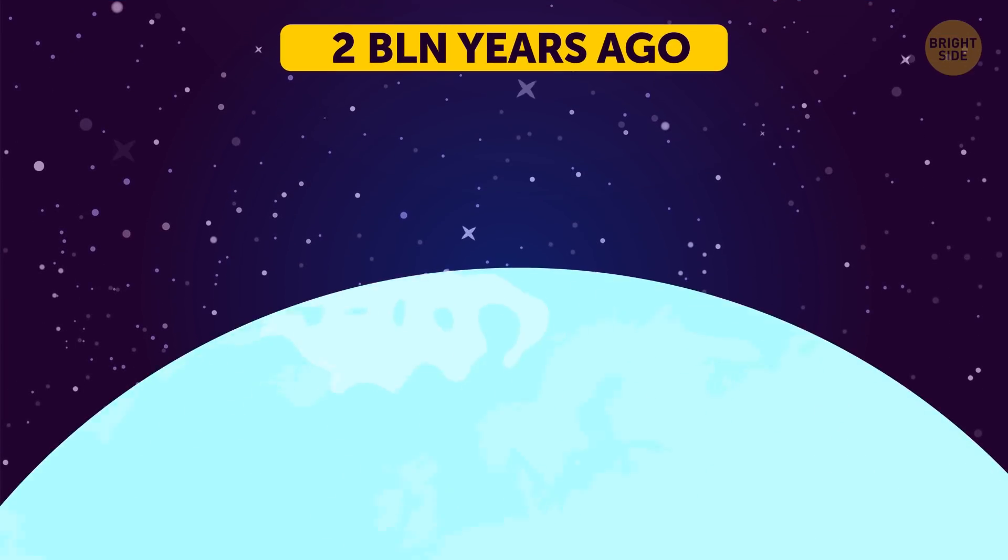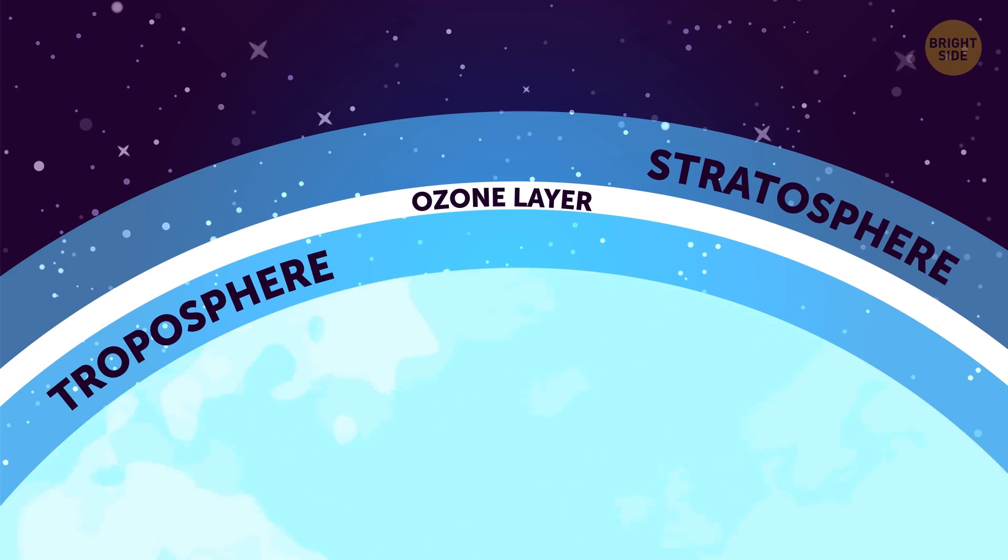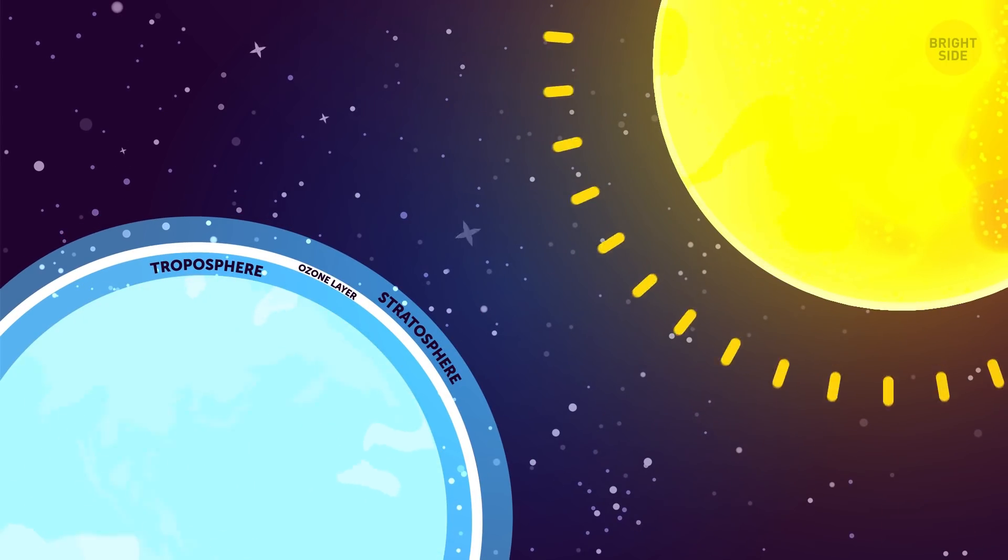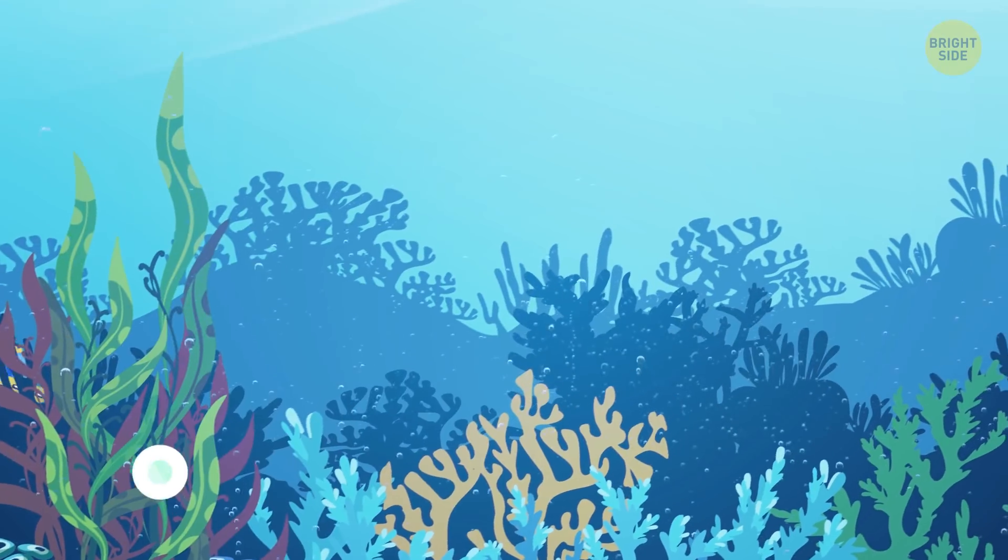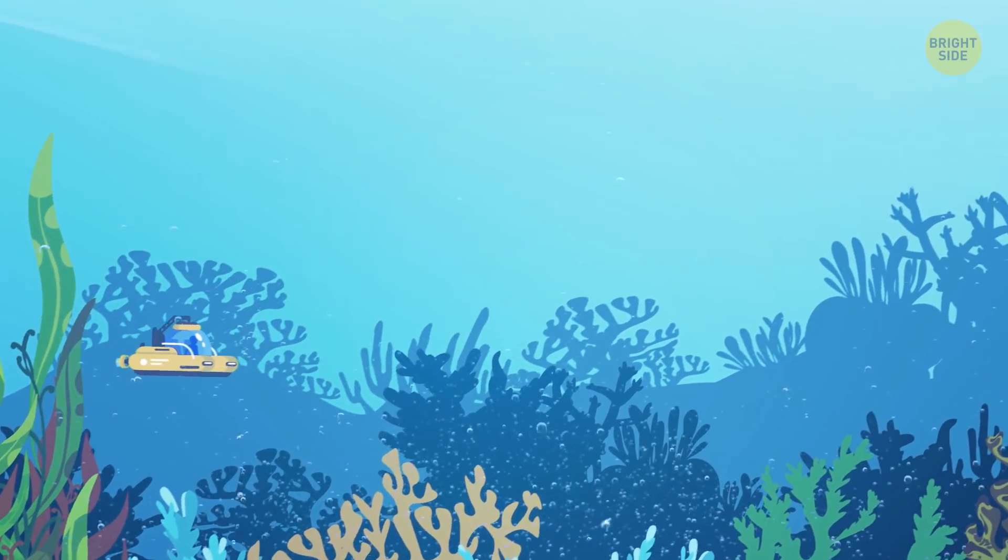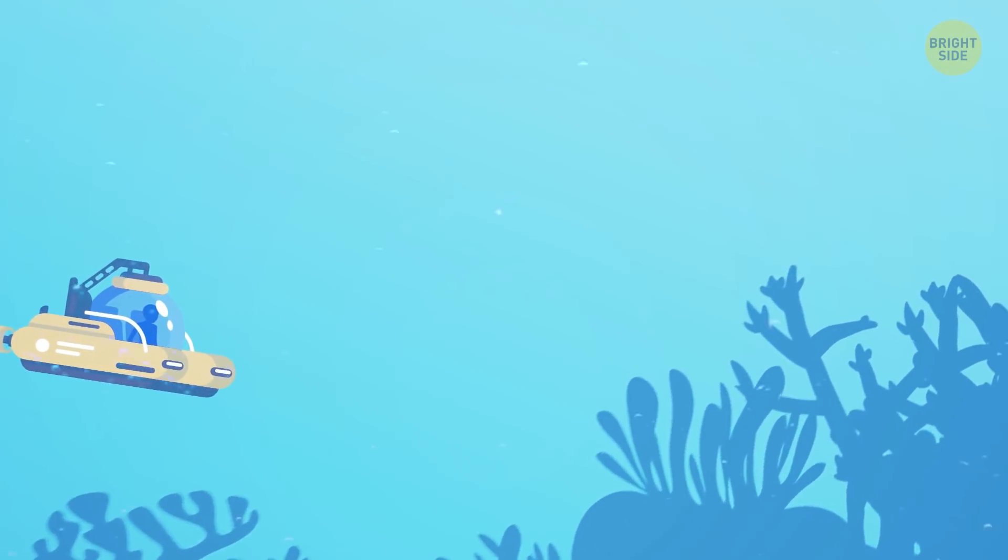2 billion years ago, the ozone layer starts to form. It not only protects the planet from the Sun's harmful radiation, it also warms this planet up a bit. The Earth explodes with life, which moves from the oceans to the land over the next billion years.